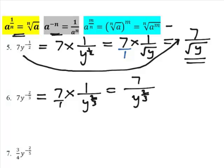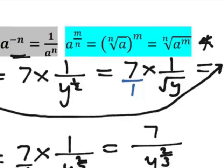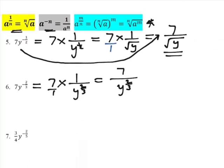Then we come over to this rule here, the top, the last one on the top, where you've got a to the power of m over n. n is 3, so the root is the third root, which means cube root at the bottom.